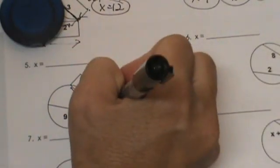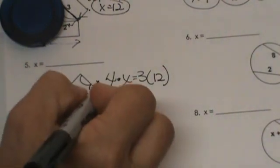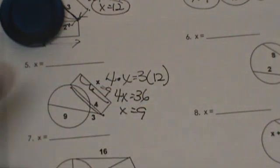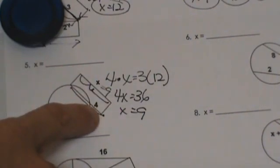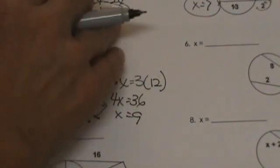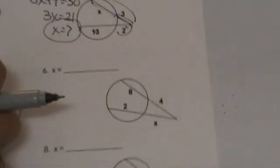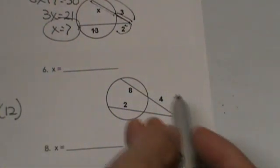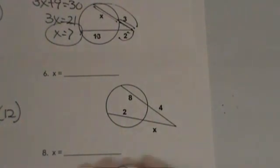So I am going to get 4x equals 36, so x is 9. So this entire secant segment is 9. If we needed to know the inside we could take 9 minus 4 and get 5. Let's look at number 6.